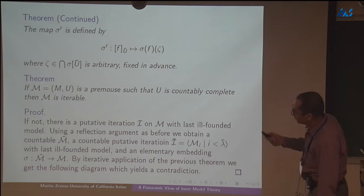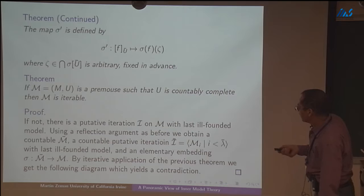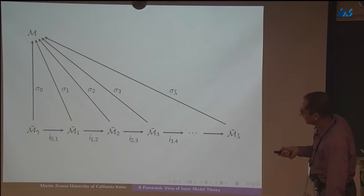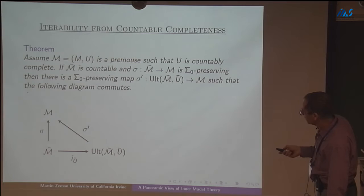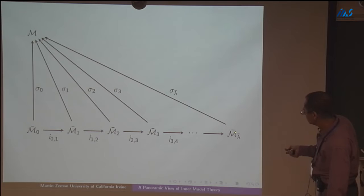If your model is better and you have the Łoś theorem for a higher degree of complexity, then you get a higher degree map. We can prove iterability of such a mouse by that argument: any putative iteration with a last ill-founded model is going to reflect to some countable putative iteration with a last ill-founded model. But the inductive application of this lemma will allow us to construct such a diagram — since this is countable, all models are countable — iteratively apply, all maps commute, so in the end the last structure can be embedded into m. But that shouldn't be possible because this one is ill-founded, so that's a proof by contradiction.